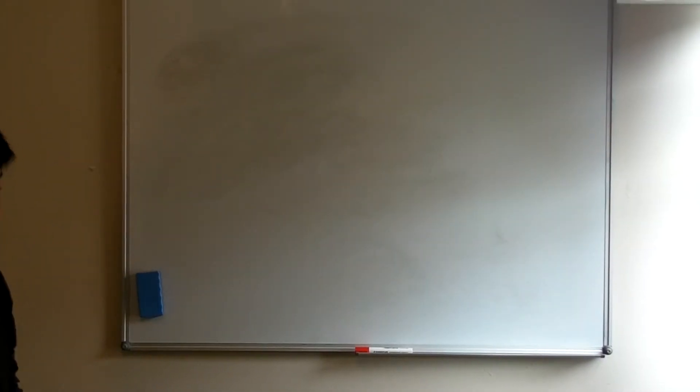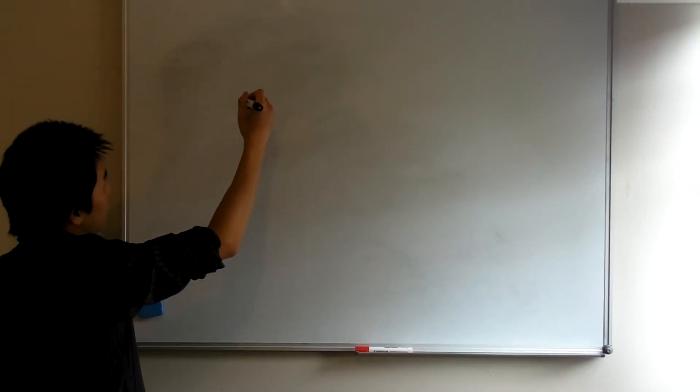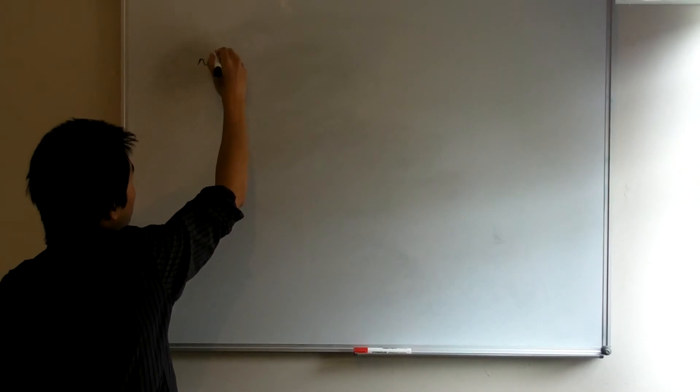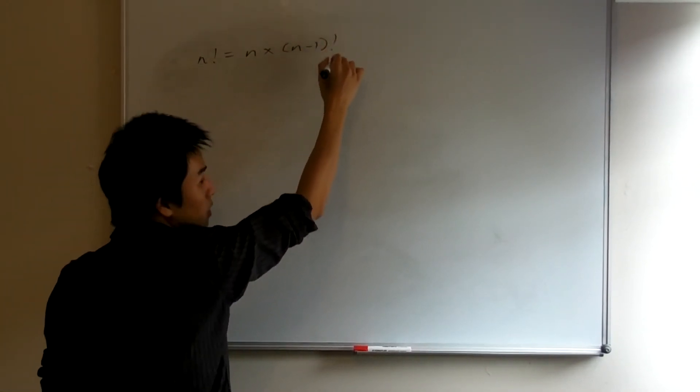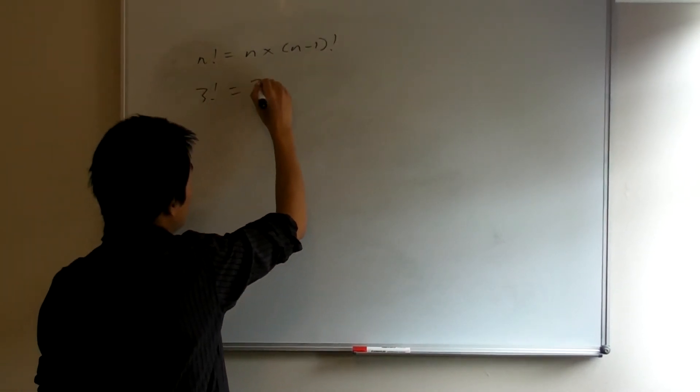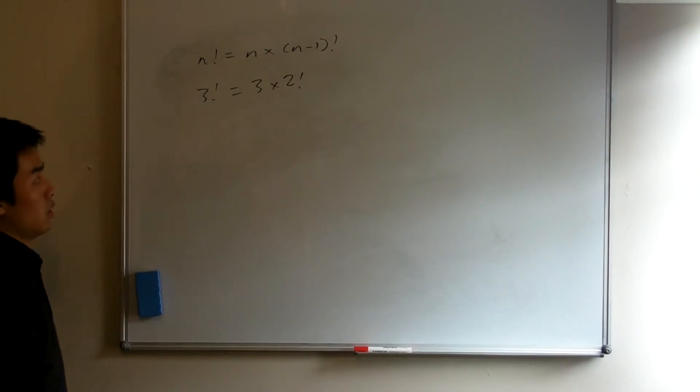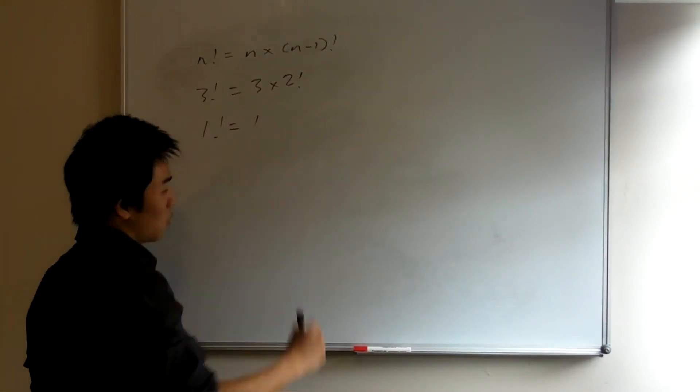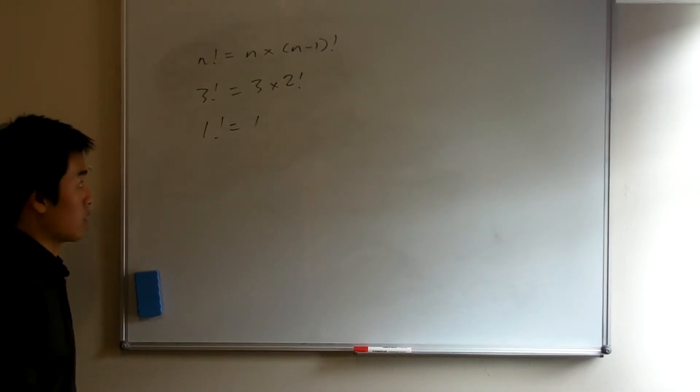Okay, next question. What is zero factorial? Well, in general, we know that n factorial can be written as n times n minus 1 factorial. So for example, 3 factorial is 3 times 2 factorial. And we obviously know that 1 factorial is just 1. So we're going to use these tools as a bridge towards 0 factorial.